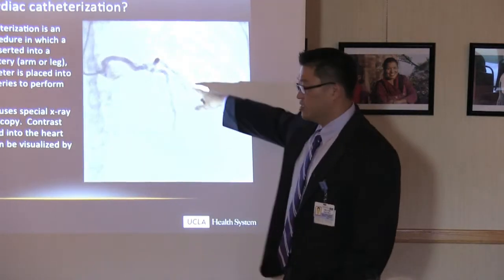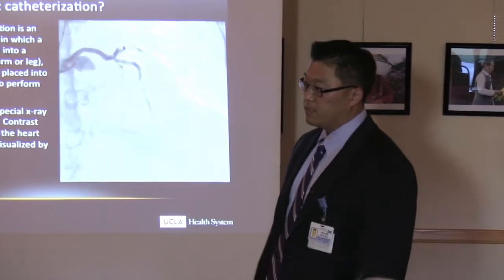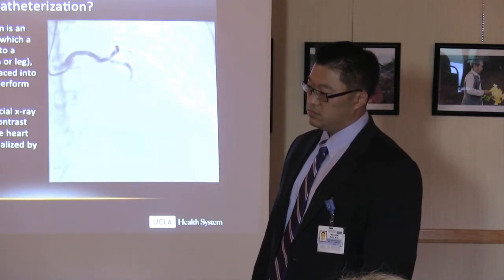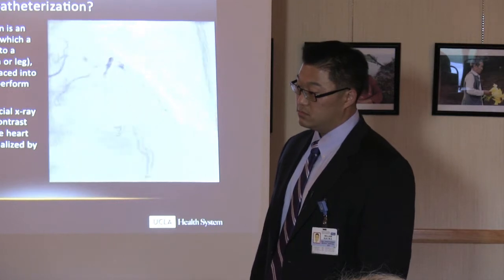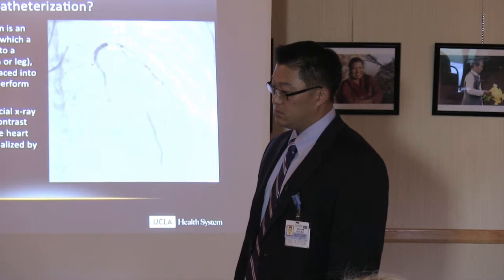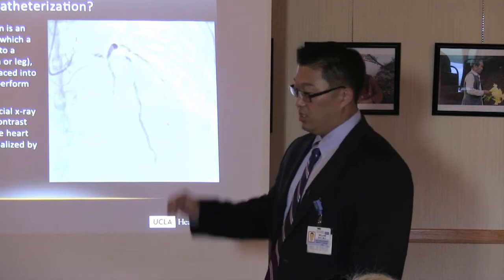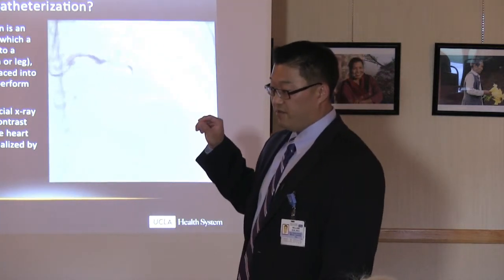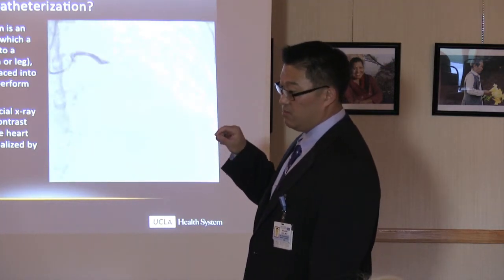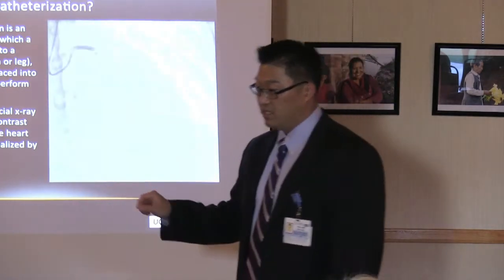When we do angiography, we just look at the lumen of the artery — the flow. A CT angiogram can sometimes let us see the actual necrotic core of the coronary artery. Sometimes there's spotty calcification, a lot of positive remodeling of the vessel — all things associated with vulnerable plaques on the CAT scan.